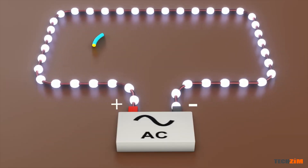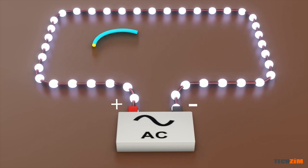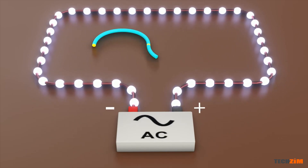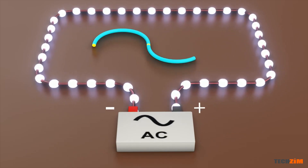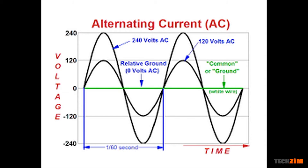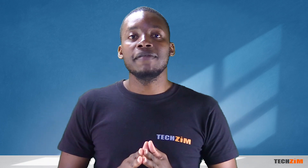The electricity we get from the grid is in the form of alternating current. This means that if we have a live and a neutral, the live always oscillates above and below the neutral. At its peak, the value of voltage is 220 volts on either side of the neutral for electricity in our homes. In Zimbabwe, this oscillation happens 50 times a second, giving us a frequency of 50 hertz. This is where the properties for synchronization come from.